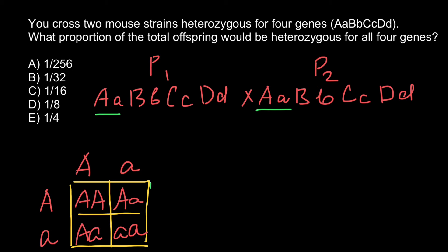As you see, the heterozygous genotype would be two out of four, or one half. So for the first pair of genes, we expect genotype Aa in one half of the progeny.